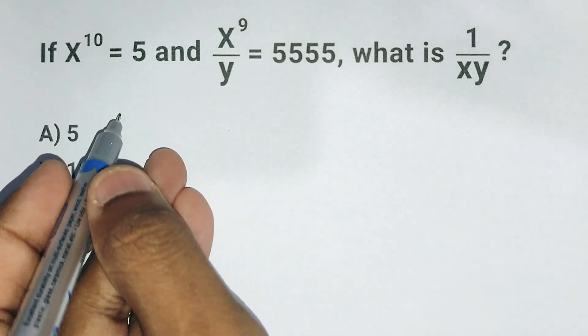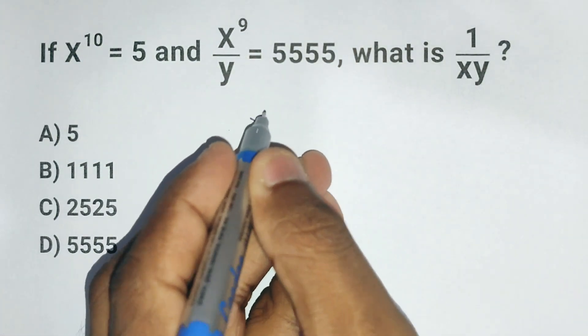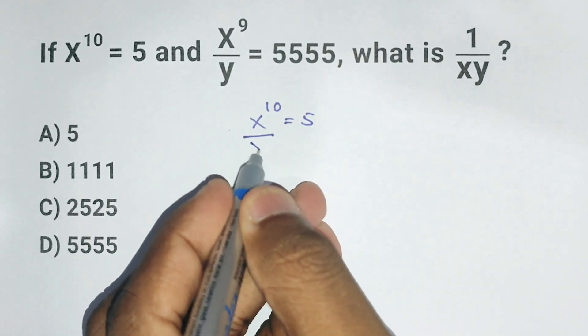Alright, let's break it down. First we know that x to the 10 is 5. Now let's divide both sides by x.